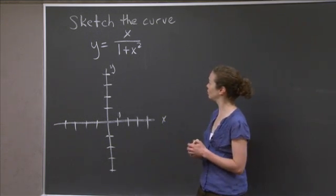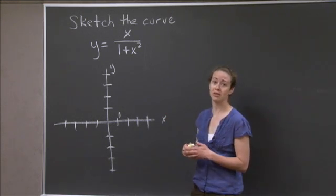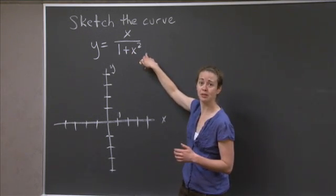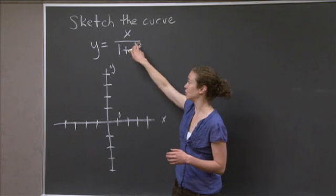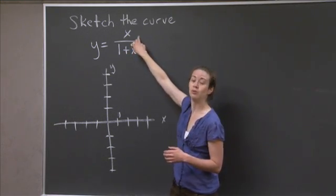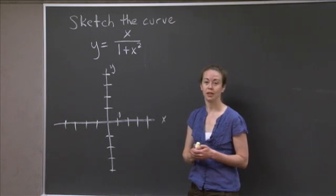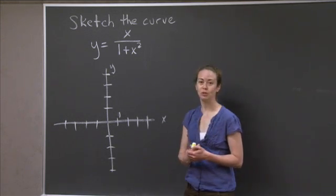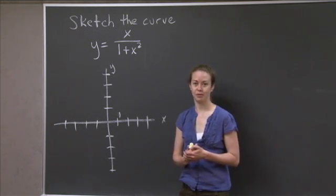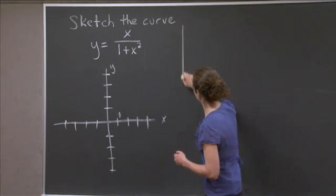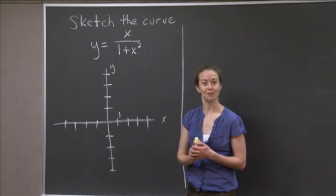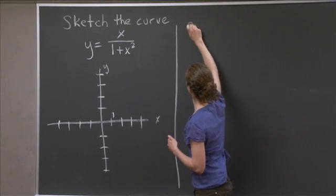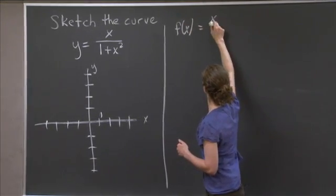Another thing we should notice is the sign of the graph — notice where the sign will change. The denominator is always positive, so the sign of the function depends completely on the numerator. When the numerator is positive, this function will be positive; when the numerator is negative, this function will be negative. Now let's go to using our derivatives to figure out a little bit more. Obviously, first I should take some derivatives, and then we'll look at what we can get out of them.